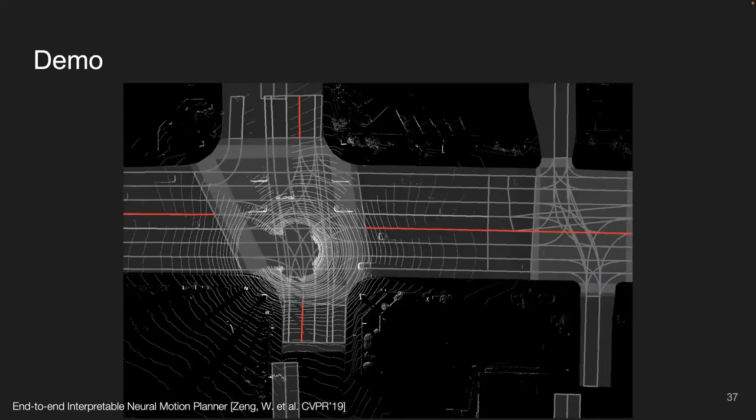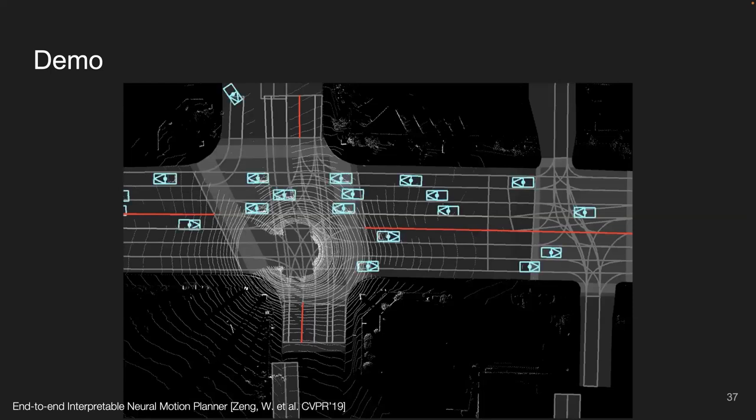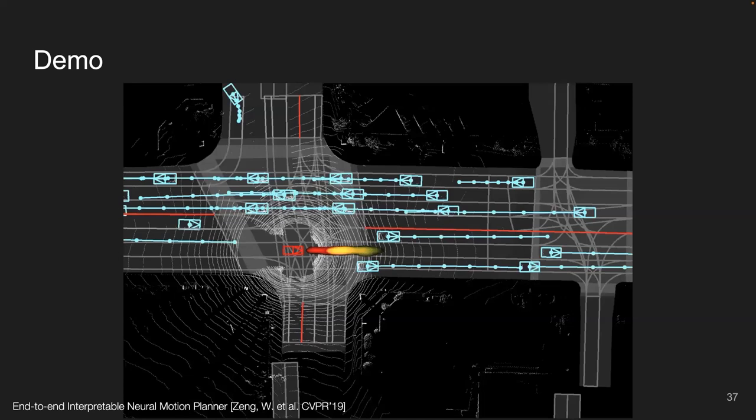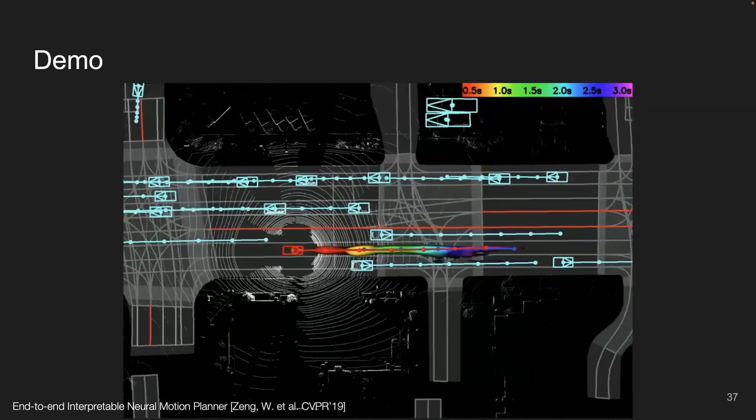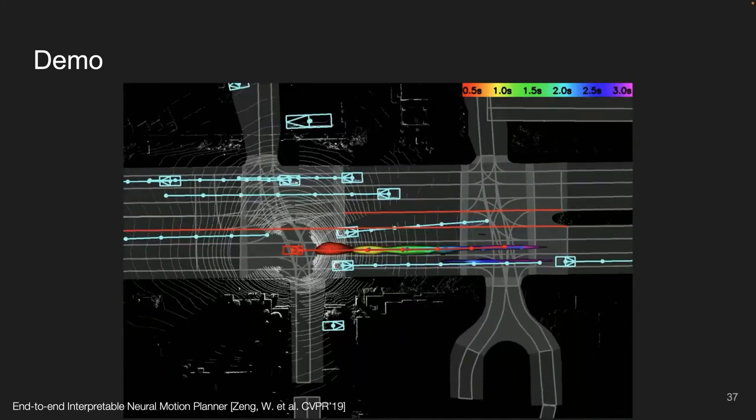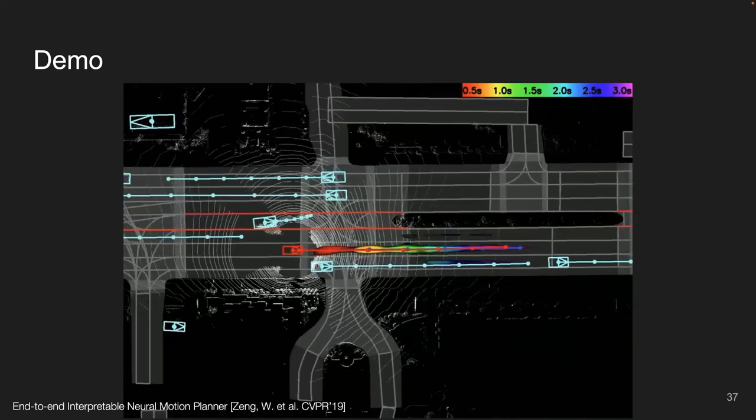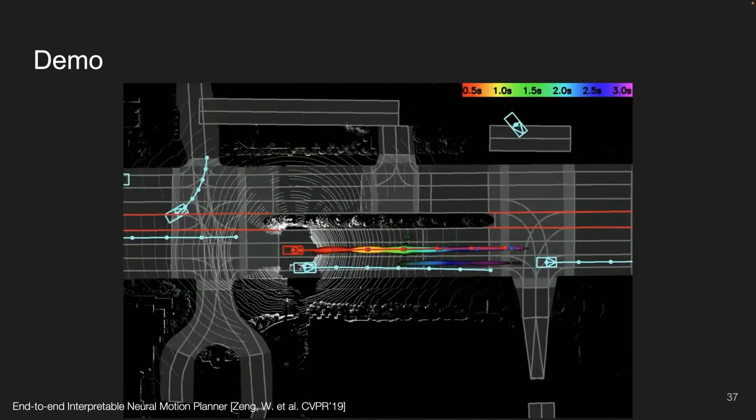Let's look at some qualitative results. So our model will take LiDAR and map as input and output detection as well as prediction. And for the motion planning potential field, we highlight low-cost region for different future time steps using different colors. Our plan trajectory is showing red. As you can see, our planner can follow the lane very nicely. And I also noted that our neural potential field captures multi-modality. In this case, we can either go straight or lane change to the right.